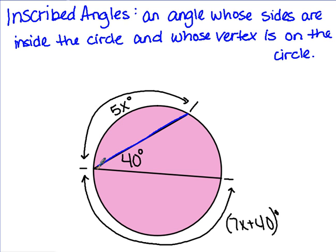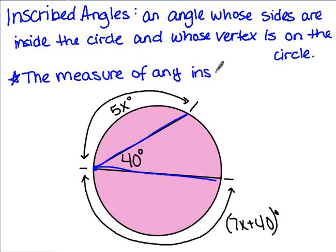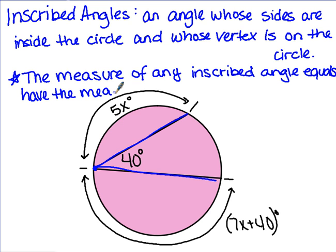This is the inscribed angle. The sides of it are inside the circle and the vertex is on the point on the outside. Now, how do we find measurement of the different arcs and angles of the circle? The measure of any inscribed angle equals half the measure of the intercepted arc.